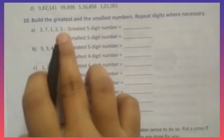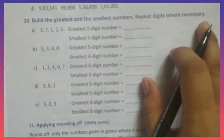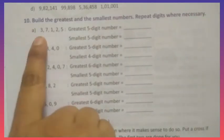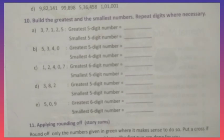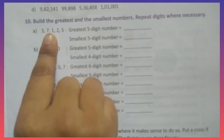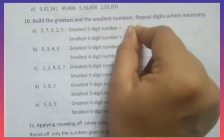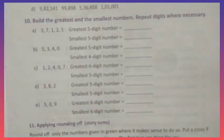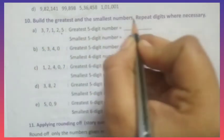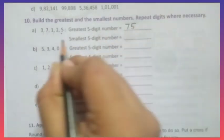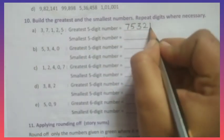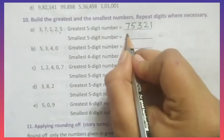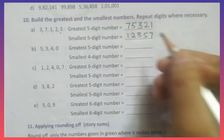Now look at the 10th bit: build the greatest and smallest numbers, repeating digits where necessary. These are the given digits: 3, 7, 1, 2, 5. To write the greatest number, arrange these digits from big to small (descending order) — don't keep commas between digits. The biggest digit is 7, then 5, 3, 2, 1. So the greatest 5-digit number is 75,321. For the smallest number, arrange from small to big: 1, 2, 3, 5, 7. So the smallest number is 12,357.